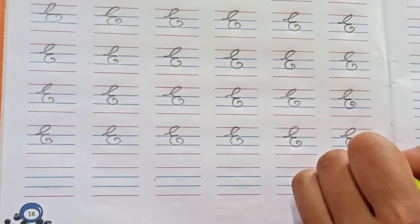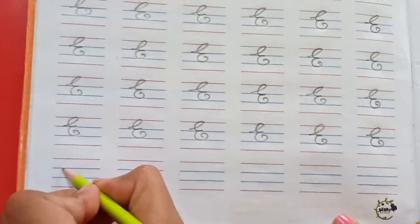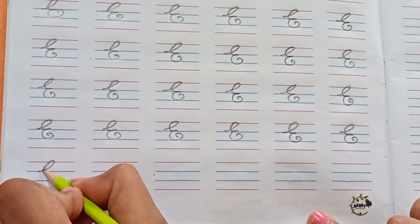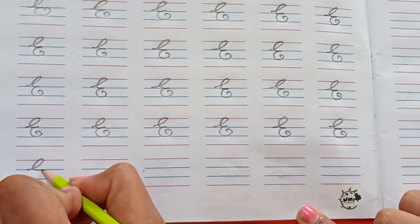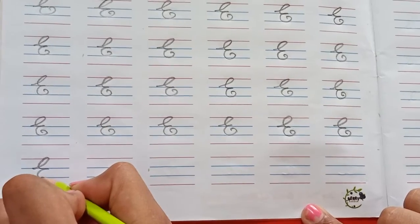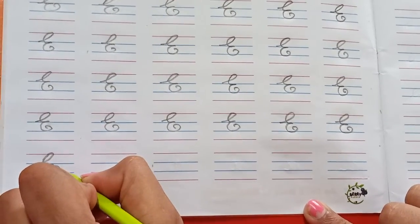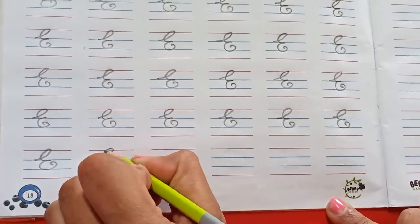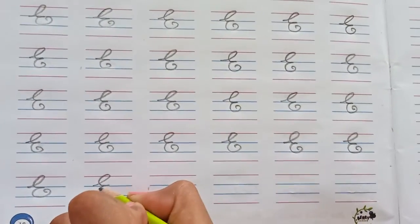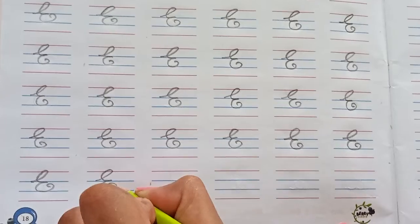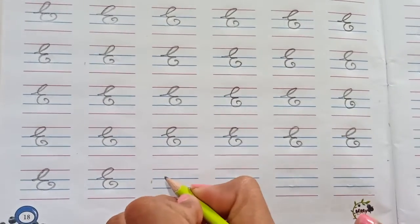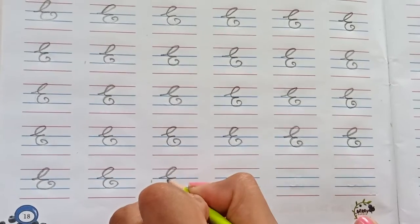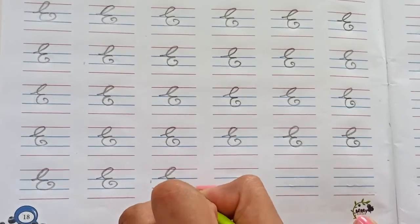You all are writing like this only, na? Yes. Starting from the blue line. Then touch red line. Then come again. Second blue line and make a small curve. Very good. Slowly, slowly you will write.